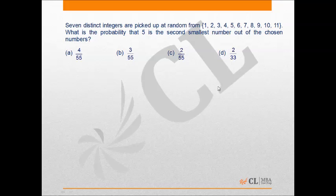If 5 is to be the second smallest number out of the chosen numbers, then only one number should be less than 5 out of the chosen seven numbers. So we have to select one out of the first four natural numbers.